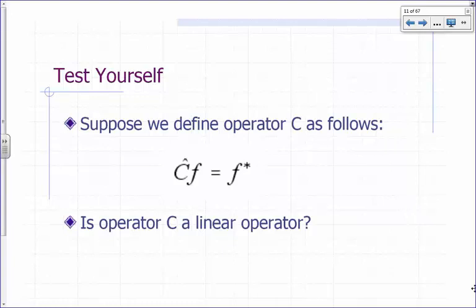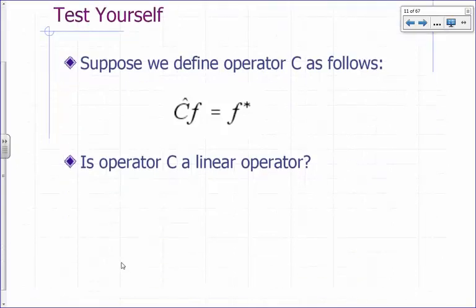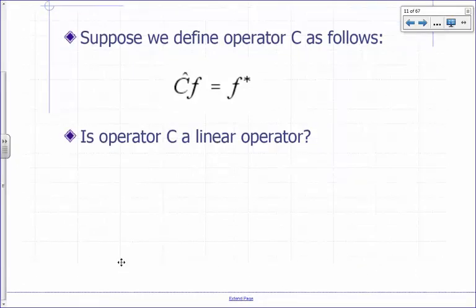Last time we talked about operators and linear operators, and one of your homework assignments was to show that C is not a linear operator. Let me show you the proof for that.